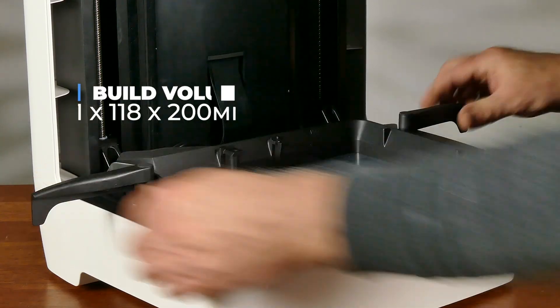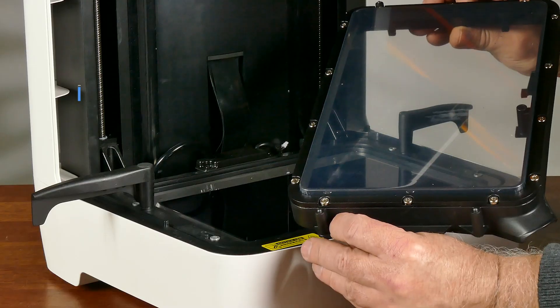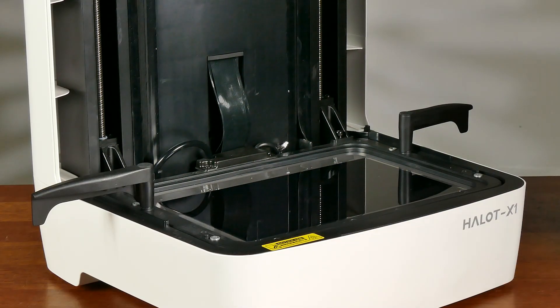The Halot X1 also has this really cool lever system to lock the vat in. I prefer this system over the usual screw knobs.